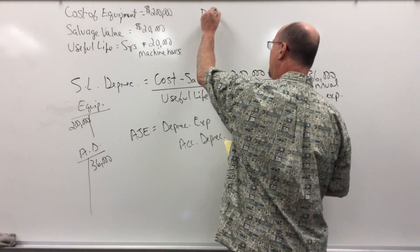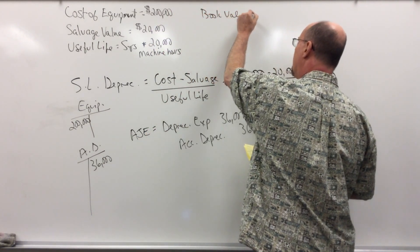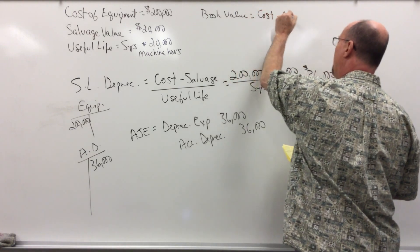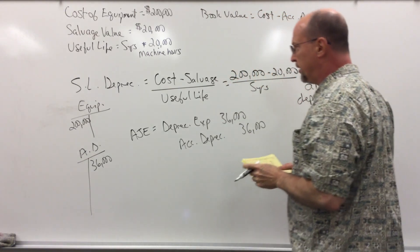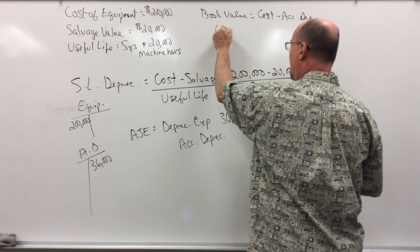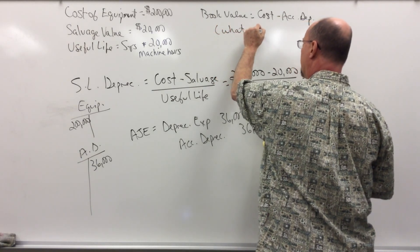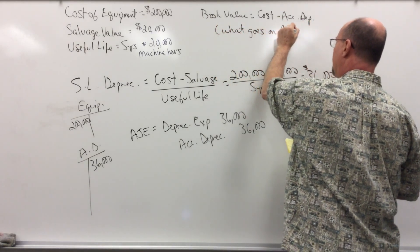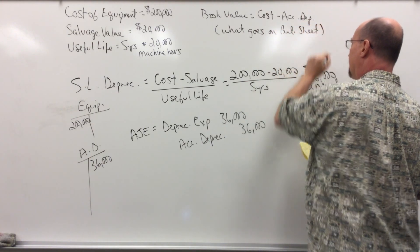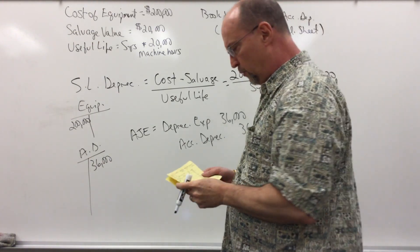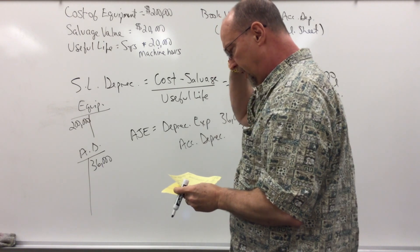The book value is your cost minus accumulated depreciation, and this is what goes on the balance sheet. We have to report equipment at its book value, which is cost minus accumulated depreciation.